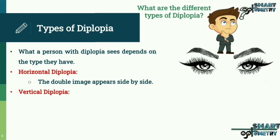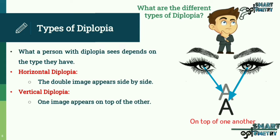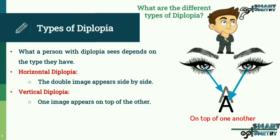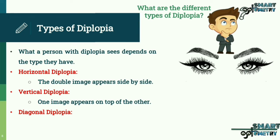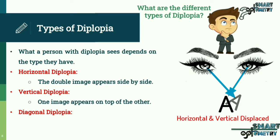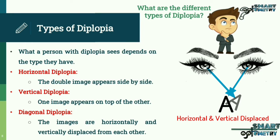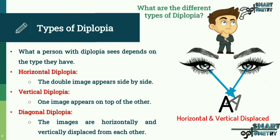Vertical diplopia: one image appears on top of the other. Diagonal diplopia: the images are horizontally and vertically displaced from each other.